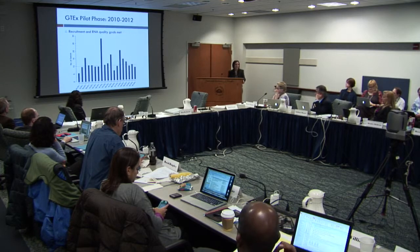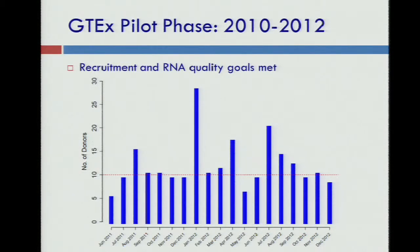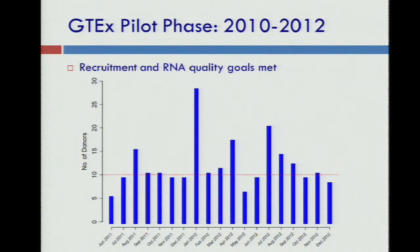GTEx started as a pilot in 2010, with the last pilot year in 2012. The recruitment and RNA quality goals, which were the main concern for full implementation, were met. The recruitment goal was to enroll at least 10 donors per month by the end of the pilot, and as you can see from this graph showing donors by month, we were able to achieve this goal on average. The RNA quality goals were also met as measured by RIN values.